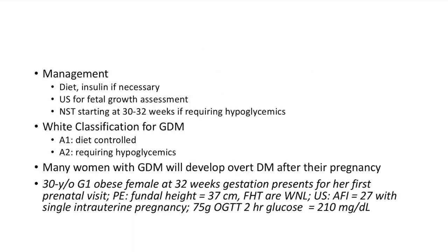Management of GDM: diabetic diet and insulin if necessary. Ultrasound should be done for fetal growth assessment. Non-stress test should be started at around 30 to 32 weeks if requiring hypoglycemics. White classification: GDM A1 is diet-controlled, whereas GDM A2 requires hypoglycemics. It is important to remember that many women with GDM will develop overt diabetes mellitus after their pregnancy.